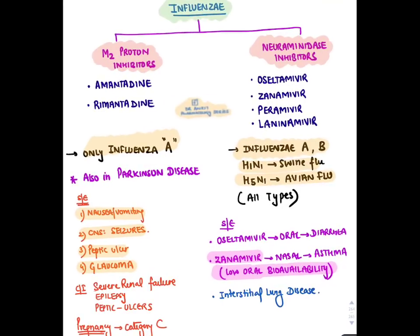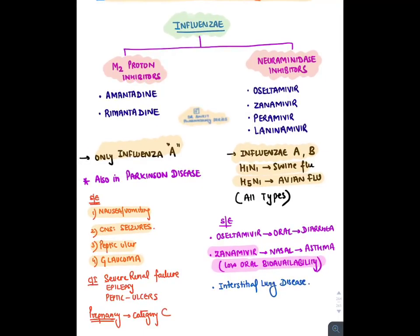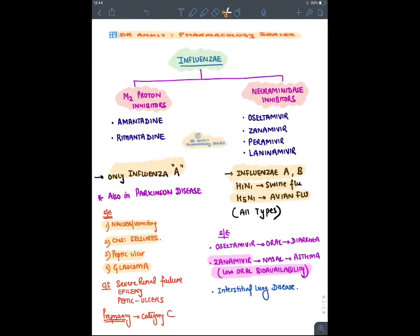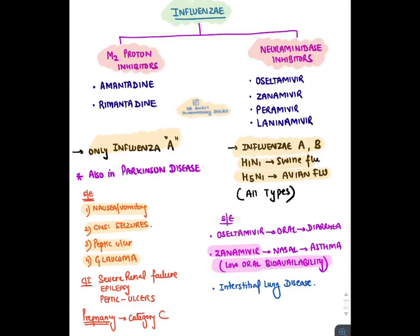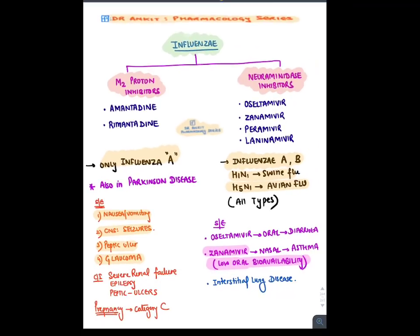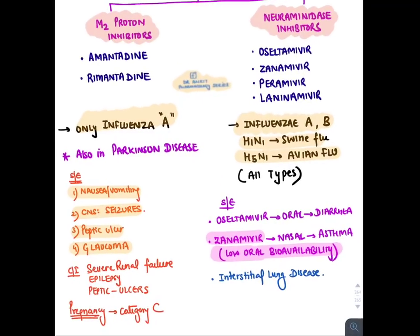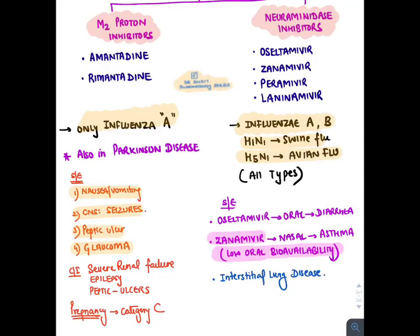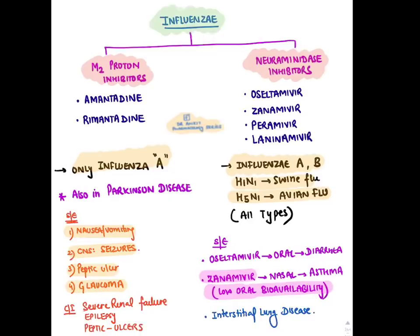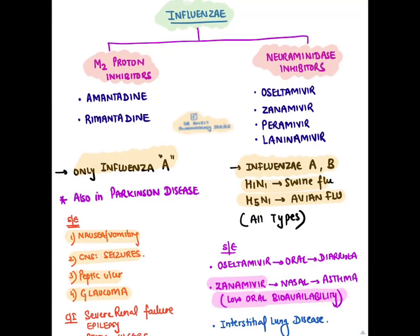Amantadine has also been approved in Parkinson's disease for levodopa-induced dyskinesia. The main side effects of Amantadine and Rimantadine: given orally, they cause nausea and vomiting; in the CNS they cause seizures by increasing neurotransmitters like glutamate. They also cause peptic ulcers and glaucoma by increasing catecholamines (dopamine, noradrenaline). They are contraindicated in renal failure, epilepsy, and peptic ulcers.